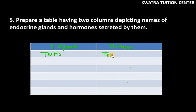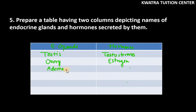Then we have ovary, and ovary releases estrogen. Then we have adrenal gland, and adrenal gland releases adrenaline. Then we have thyroid gland, and thyroid gland releases thyroxine.